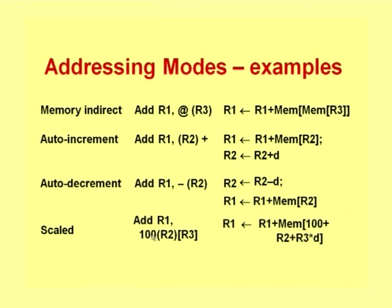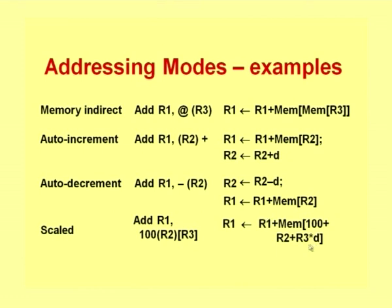Then we have the scaled addressing mode: add R1, 100(R2, R3). Here the memory location is calculated by adding 100 to the contents of R2 and the value in R3 scaled by a factor D. This is useful when dealing with arrays — for instance, when you have a two-dimensional array, D could be the size of a row if organized in row-major order. You can specify the value of D and use appropriate values in R2 and R3 to access any element of the array.